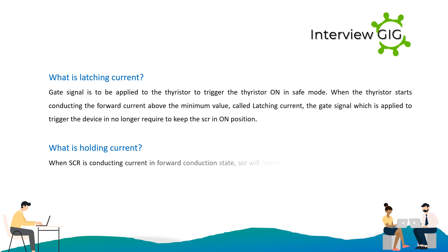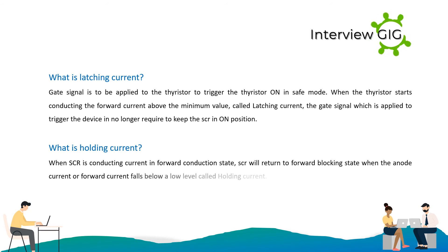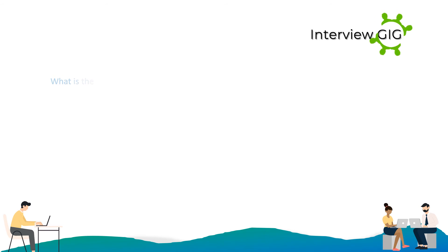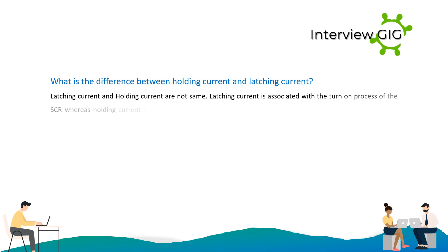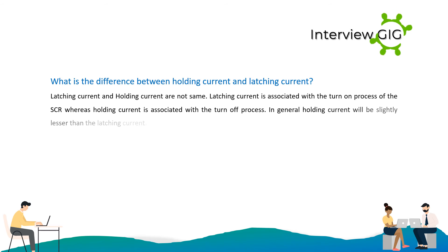What is holding current? When the SCR is conducting current in forward conduction state, the SCR will return to the forward blocking state when the anode current or forward current falls below a low level called holding current. The difference: latching current is associated with the turn-on process of the SCR whereas holding current is associated with the turn-off process. In general, holding current is slightly lesser than the latching current.